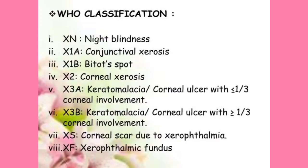X3A and X3B are both keratomalacia, also called corneal ulcer. The ulcer is in the cornea — the transparent portion of the eye. To differentiate: X3A is corneal ulcer or keratomalacia involving less than one third of the corneal area, and X3B is corneal ulcer or keratomalacia involving more than one third of the corneal area.